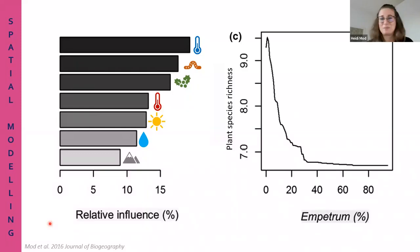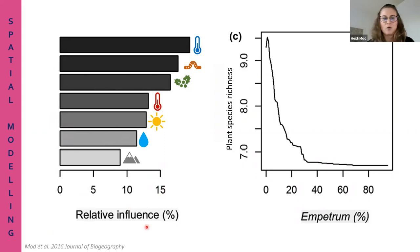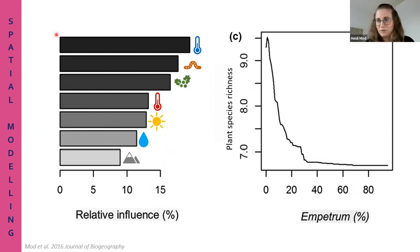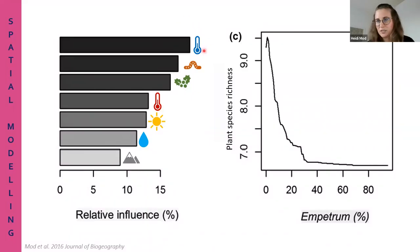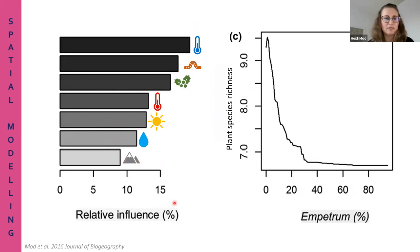I haven't yet explained how spatial modeling or SDMs actually work, but that will come shortly. What we can get out from spatial modeling is, for example, a comparison of the relative influence of different predictors. Here on the left is a study assessing the drivers of plant species richness. In this Arctic study area, winter temperature is the most influential driver of plant species richness, whereas topography is the least.